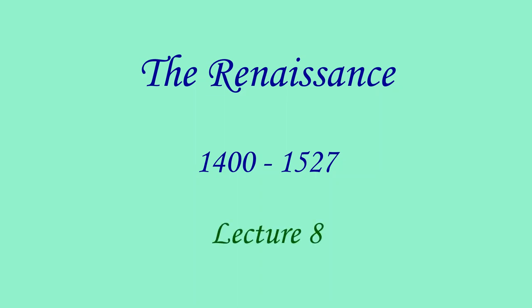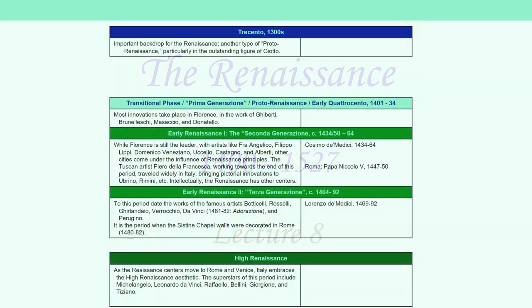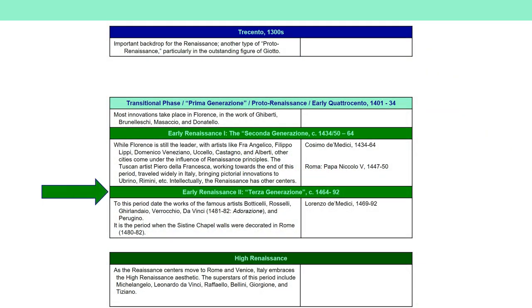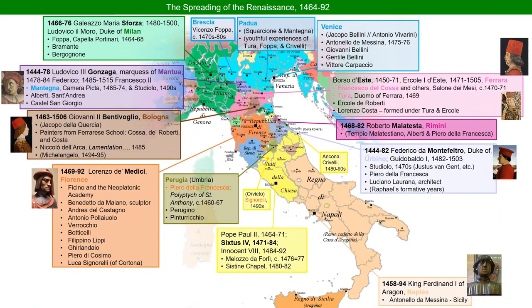This is lecture 8 in our course on the Italian Renaissance. Moving into the terza generazione, or third generation, of Italian artists in the 1400s, this lecture will cover mostly secular art. This map of Italy showing the Renaissance rulers also indicates where artistic innovation is taking place in the period from about 1464 to about 1494.